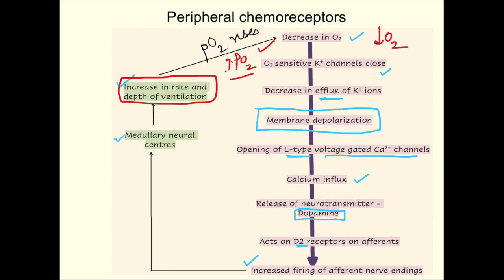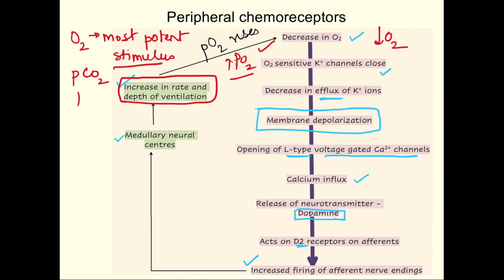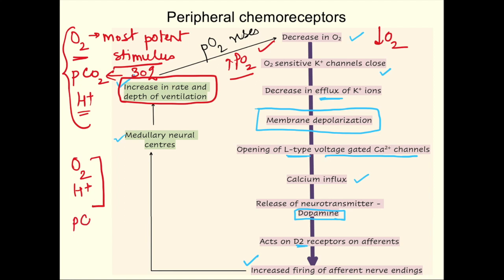For peripheral chemoreceptors, oxygen is the most potent stimulus, though they also respond to partial pressure of carbon dioxide and H+ ions. For changes in carbon dioxide, peripheral chemoreceptors are responsible for only 30% of the response; the rest is brought about by central chemoreceptors. The response to changes in H+ ions is brought about exclusively by peripheral chemoreceptors, not by central chemoreceptors.